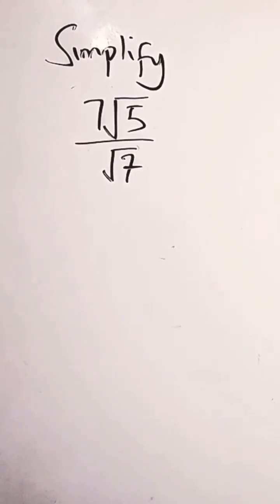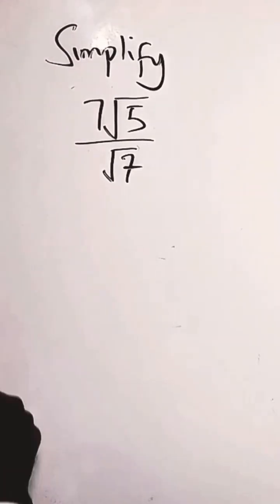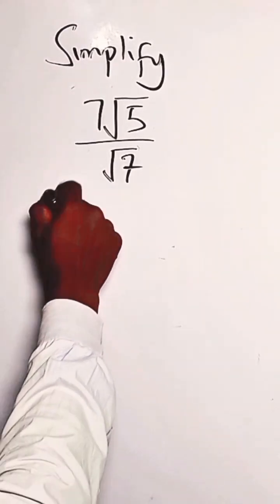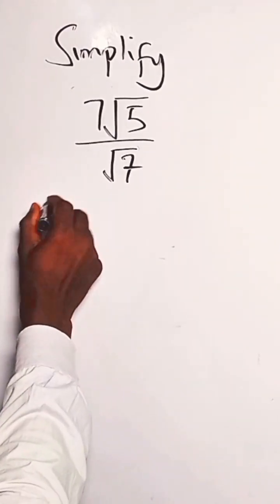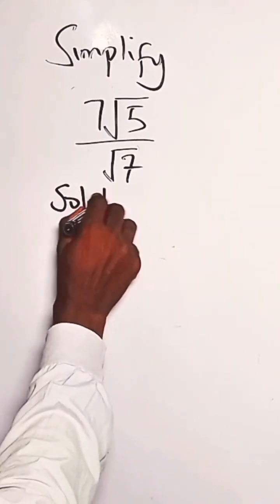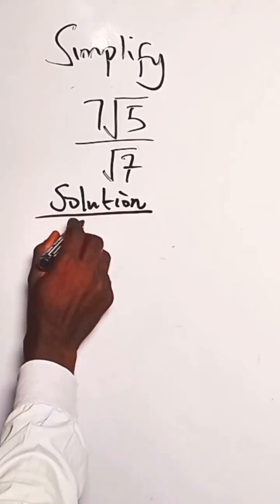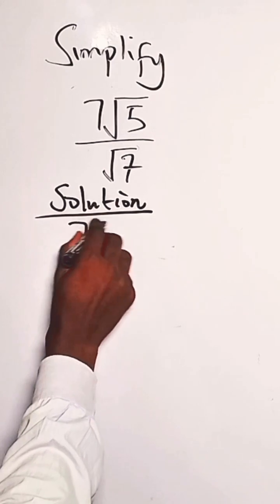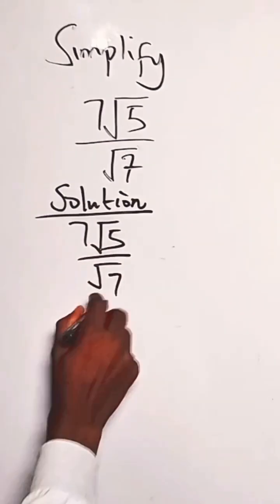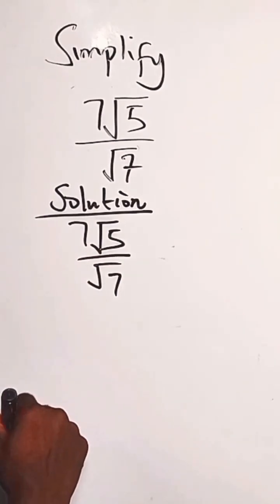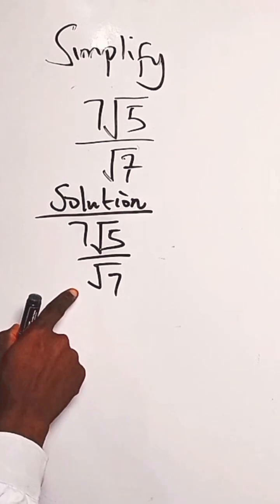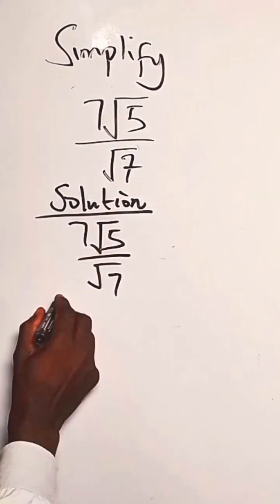The question is to simplify this expression. We have 7√5 over √7. To simplify this, we need to rationalize the denominator.